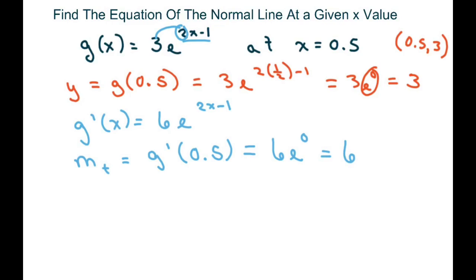Now the normal slope is the opposite reciprocal of that. So if I write this in fraction form and flip it and change the sign, that's the slope of the normal line. So we're going to use this slope and this point to find our equation.